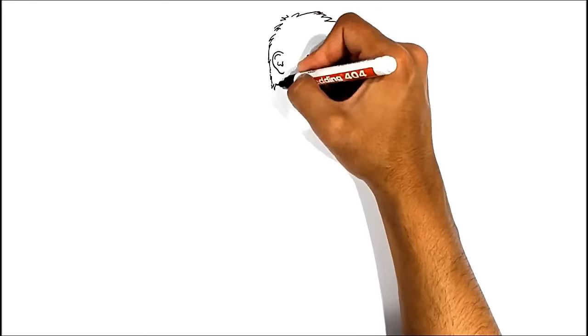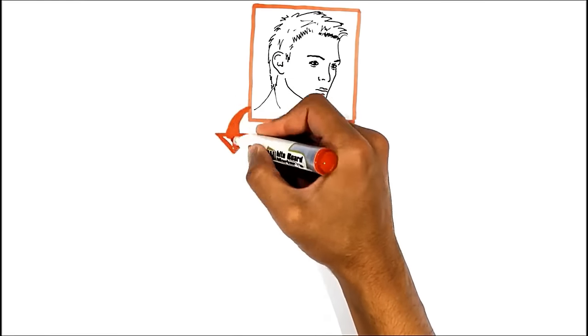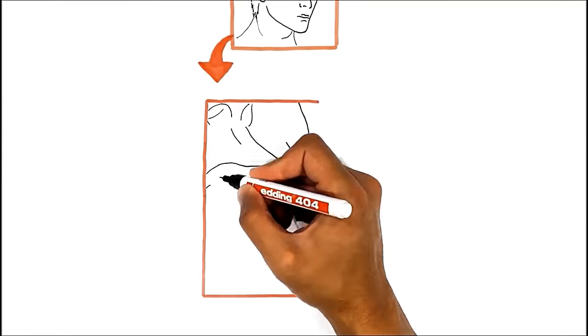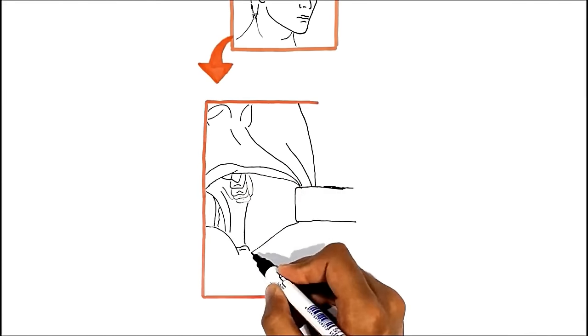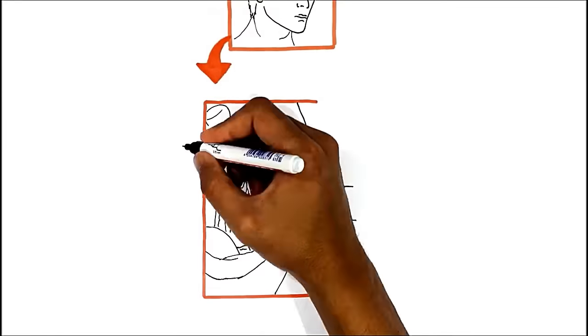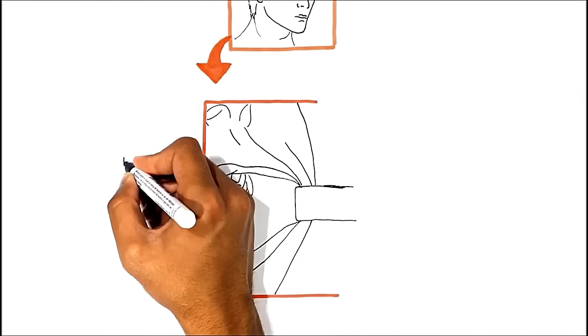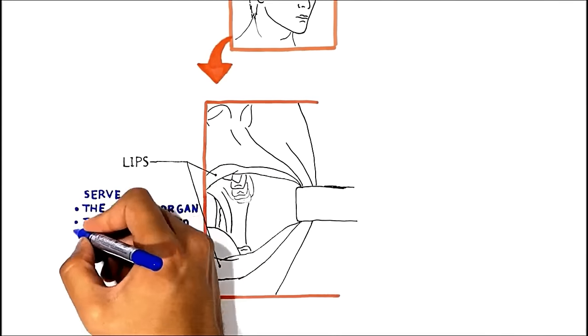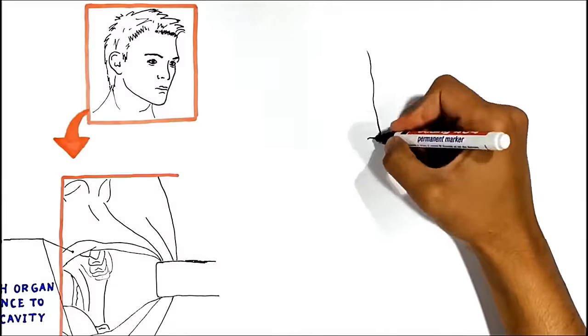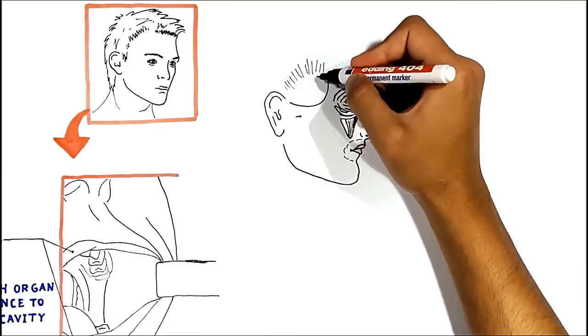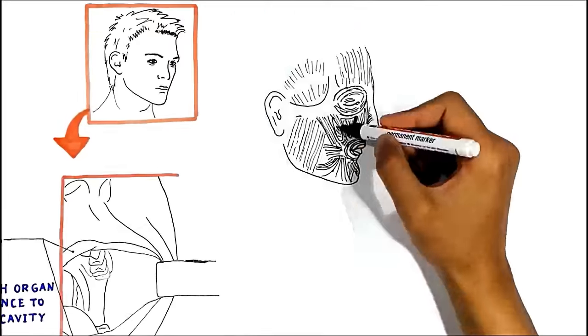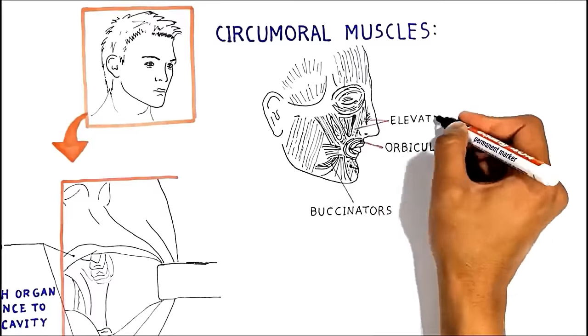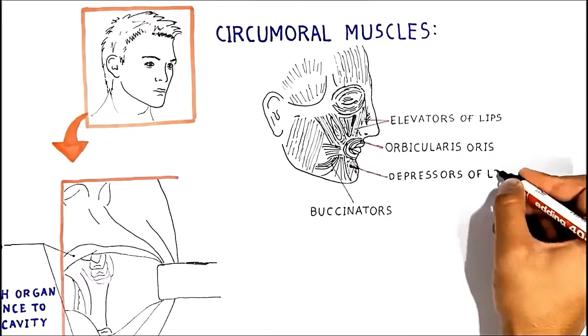Now, finally, let me draw here the anterolateral view of the mouth to clearly show and define some functions of the structures which I have mentioned above. Here we have the lips, whose principal function in humans is associated with speech and also serve as the entrance to the oral cavity. The size and opening of the oral cavity is controlled by circumoral muscles such as orbicularis oris, buccinator, elevators and depressors of lips.